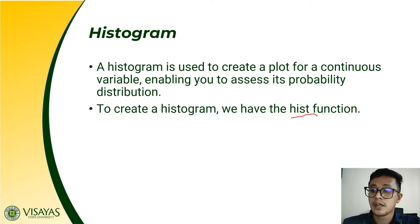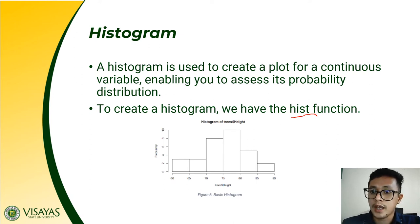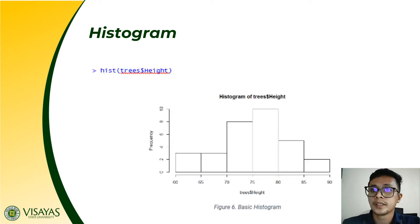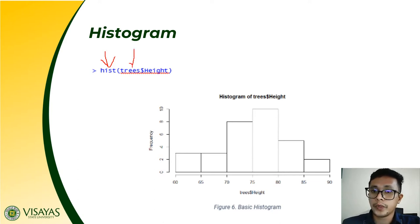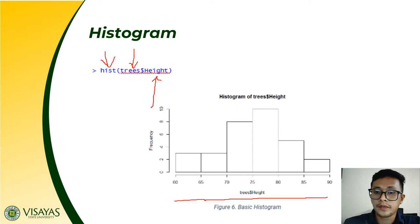Earlier we discussed the plot function for basic plots; to create a histogram we use the hist function. For example, this is a basic histogram. To create it, we use the hist function, define the dataset, and specify the variable. In this case it presents the histogram of the height variable of the trees dataset. We can further customize this histogram, and also add a curve line to show its distribution.